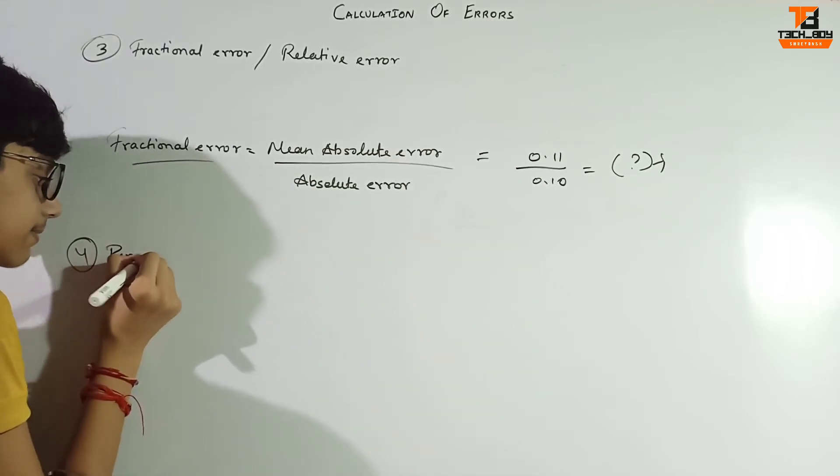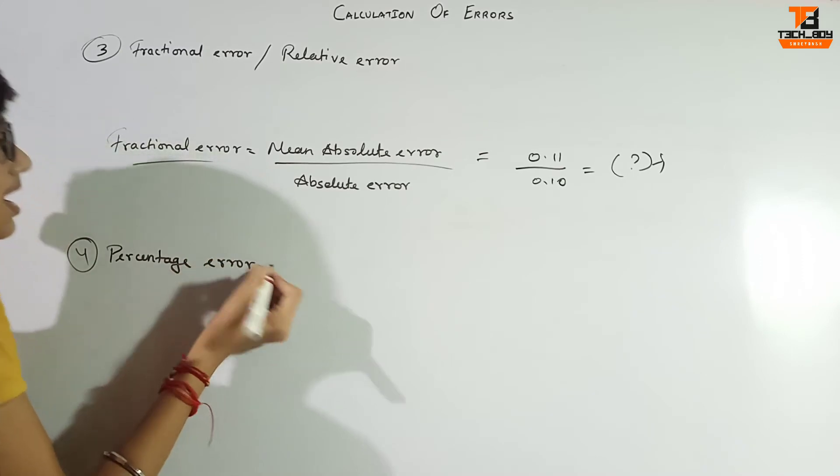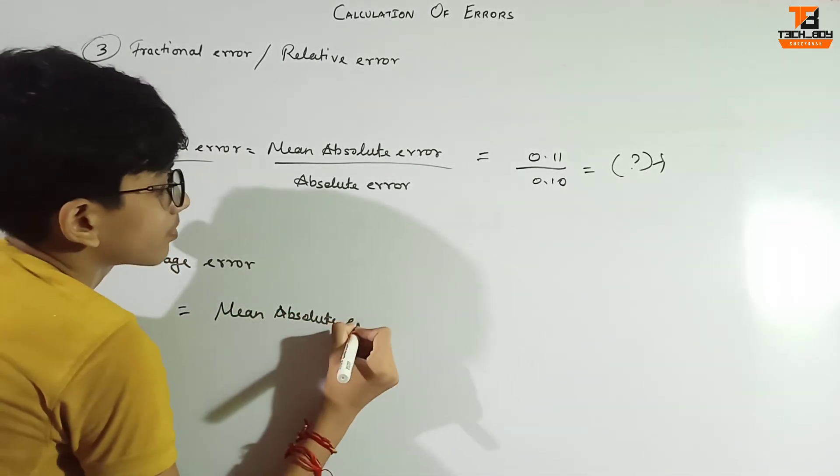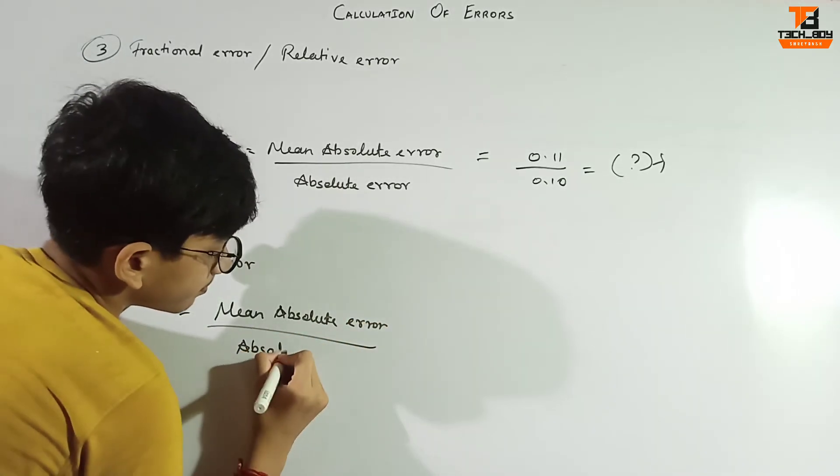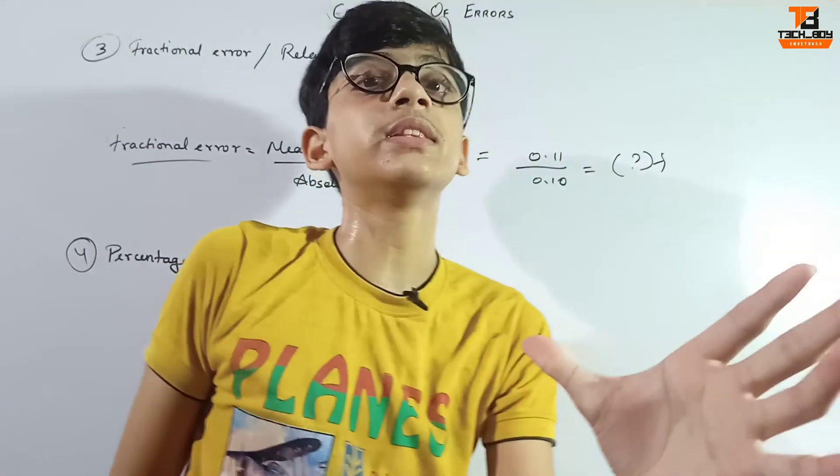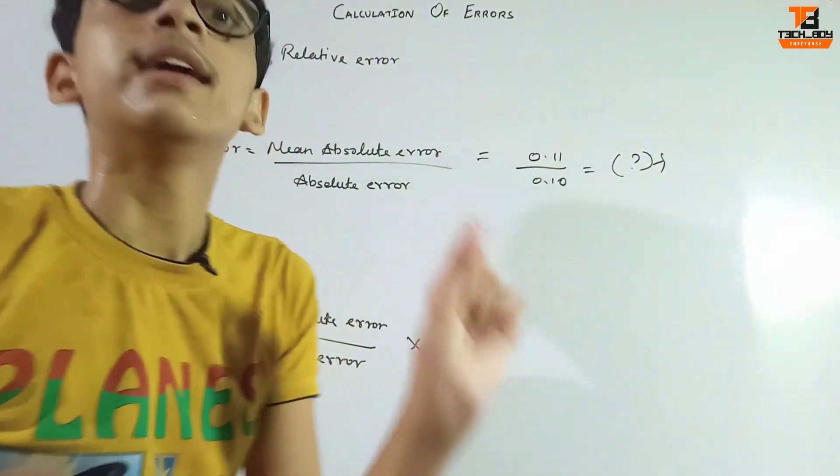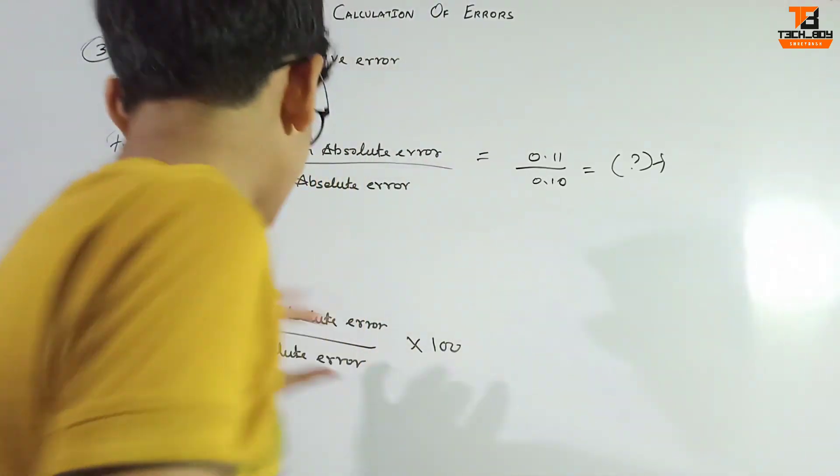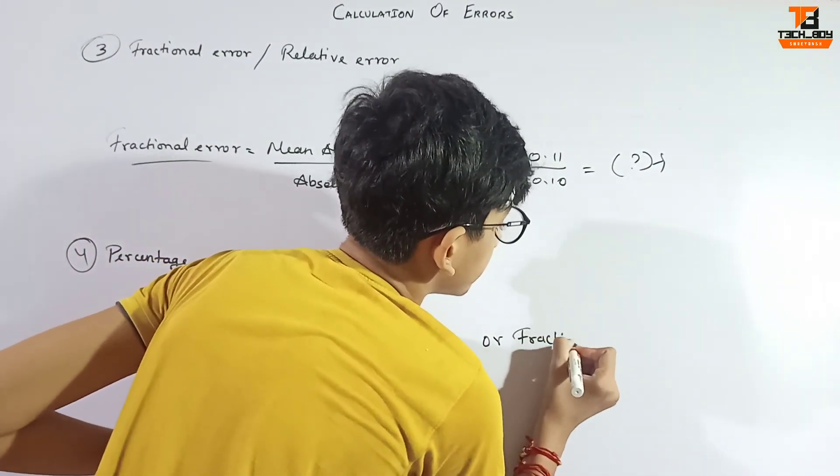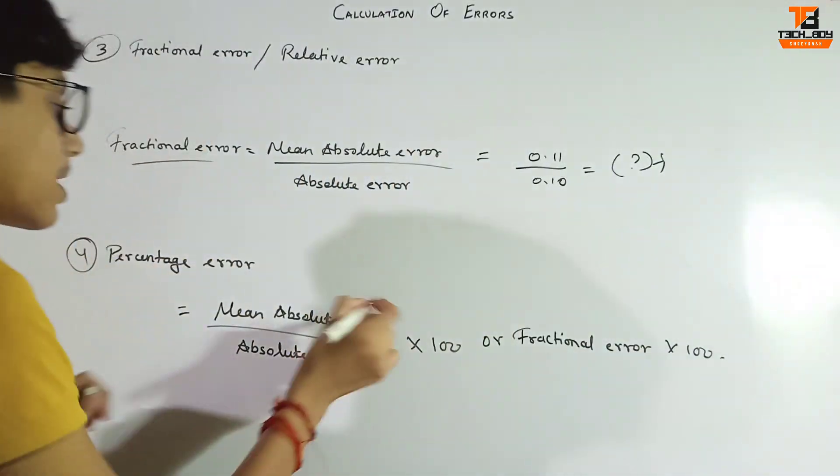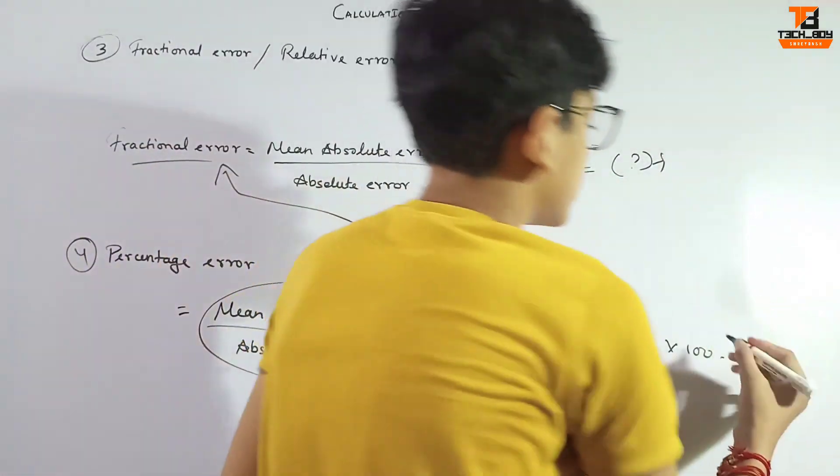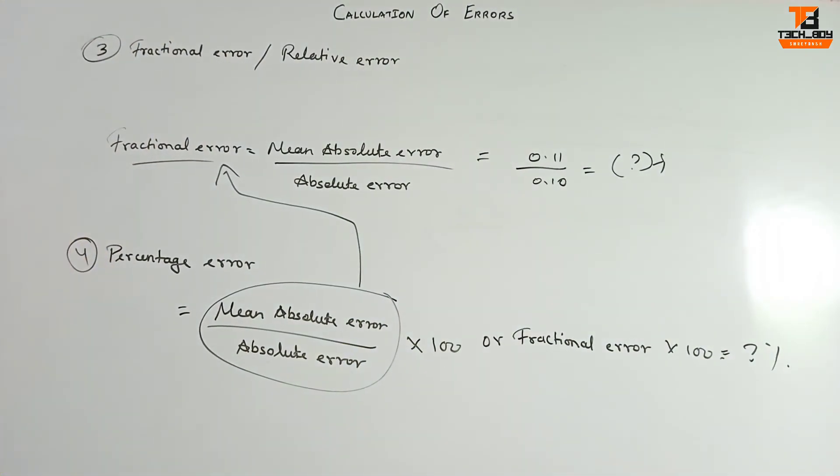And the last thing is percentage error. Mean absolute error by true value into 100, that's it. Or we can say fractional error into 100, because mean absolute error divided by true value is fractional error. So if we put fractional error and multiply by 100, we get percentage error.